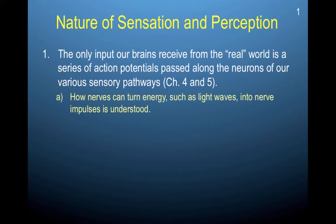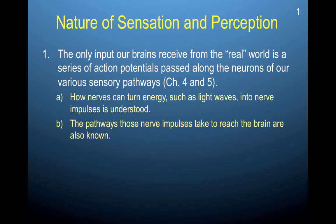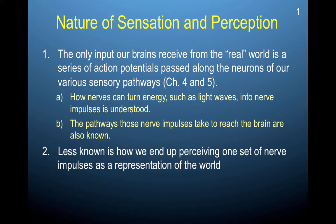Nerves turn energy, such as light waves, into nerve impulses. How is this light energy encoded by the brain? The pathways that those nerve impulses take to reach the brain are also known. When we see information or feel information, we know the path that this information travels to the brain. But we don't know how we end up perceiving one set of nerve impulses as a representation of the world.